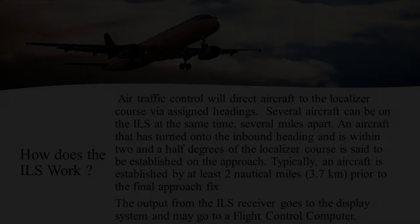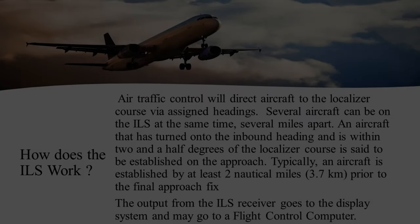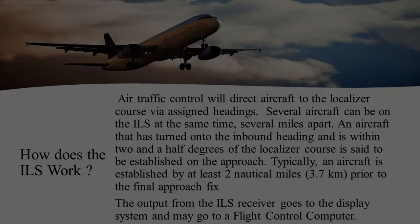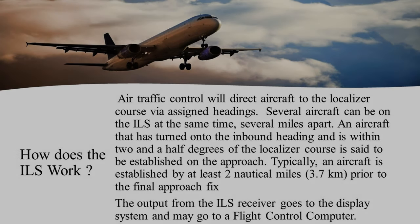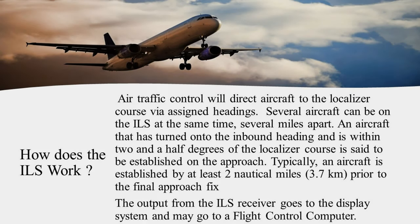Now let us discuss how the ILS works. To connect with the ILS system, air traffic control at the given airport will assign the aircraft a pre-assigned heading to connect with the localizer, which provides lateral guidance. Several aircraft can be on the ILS approach at a given time and will maintain a good distance apart from each other.